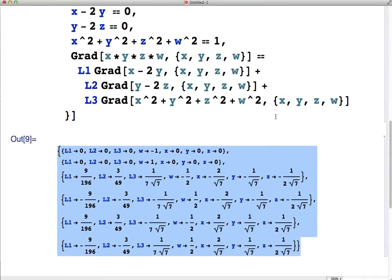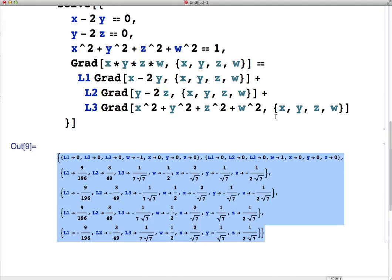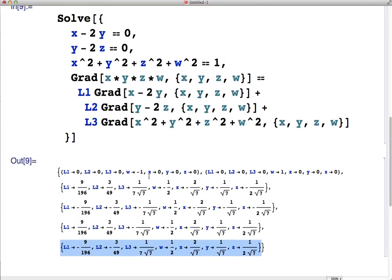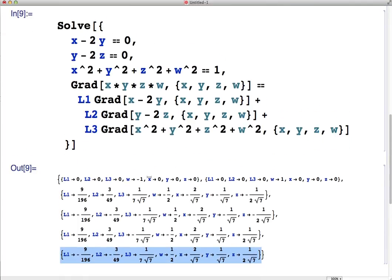Okay, so it found a bunch of solutions. It found, here's one set of solutions, here's another set of solutions, a third, a fourth, a fifth, and a sixth. So there's six solutions to the Lagrange equations, six critical points.